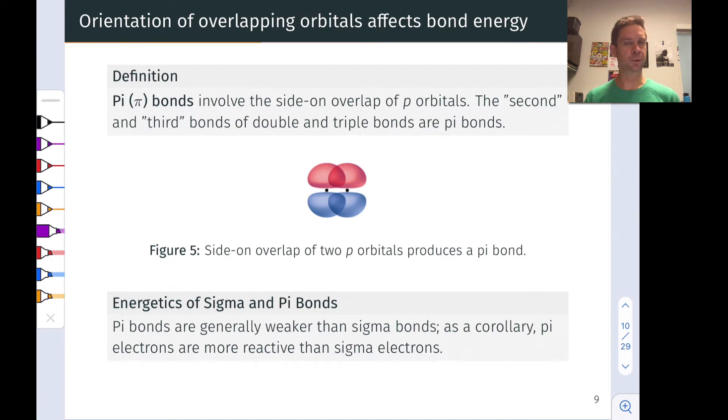If we think about the P orbitals, there's another way we can imagine them overlapping. And this involves the two orbitals in a side-on fashion where the axes of the P orbitals are aligned parallel, but there's overlap of the two lobes above and below the bonding axis. This is what's known as a pi bond. Pi bonds involve side-on overlap. And these are the second and third bonds of double and triple bonds where we have a multiple bonding situation. It's actually only geometrically possible to have one sigma bond. The remaining two bonds are pi bonds.